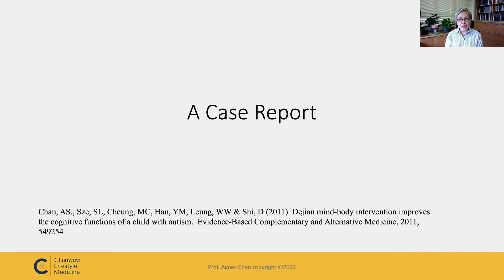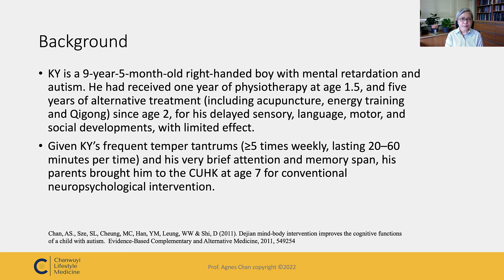Let me share with you a case report. KY is a nine-year, five-month-old right-handed boy with mental retardation and autism. He received one year of physiotherapy at age 1.5 and five years of alternative treatment including acupuncture, energy training, and qigong since age two. He has delayed sensory, language, motor, and social development. His parents brought him to CUHK at age seven for conventional neuropsychological intervention.